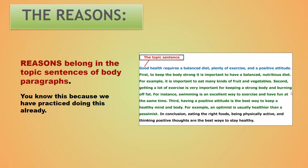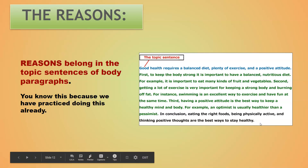Here is an example of a topic sentence and supporting details. Topic sentence: 'Good health requires a balanced diet, planning of exercise, and a positive attitude.' Then supporting details follow: 'First, to keep the body strong, it is important to have a balanced, nutritious diet — for example, it is important to eat many kinds of fruits and vegetables. Second, getting a lot of exercise is very important for keeping a strong body and burning off fat.' The paragraph concludes: 'In conclusion, eating the right foods, being physically active, and thinking positive thoughts are the best ways to stay healthy.'